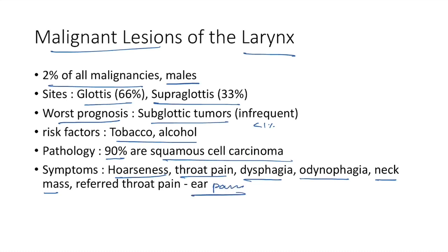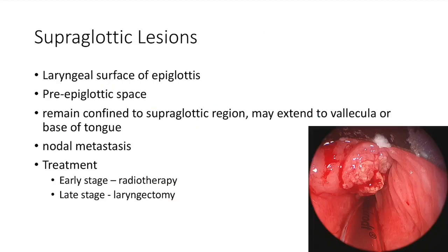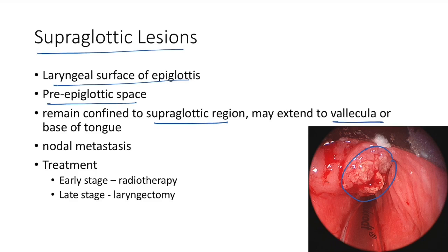Symptoms of CA larynx: throat pain, which is usually referred to the ear. Supraglottic lesions appear in the laryngeal surface of the epiglottis, usually affecting the pre-epiglottic space; may extend to the vallecula or base of tongue with nodal metastasis. Treatment: for early stage — radiotherapy; for late stage — laryngectomy.